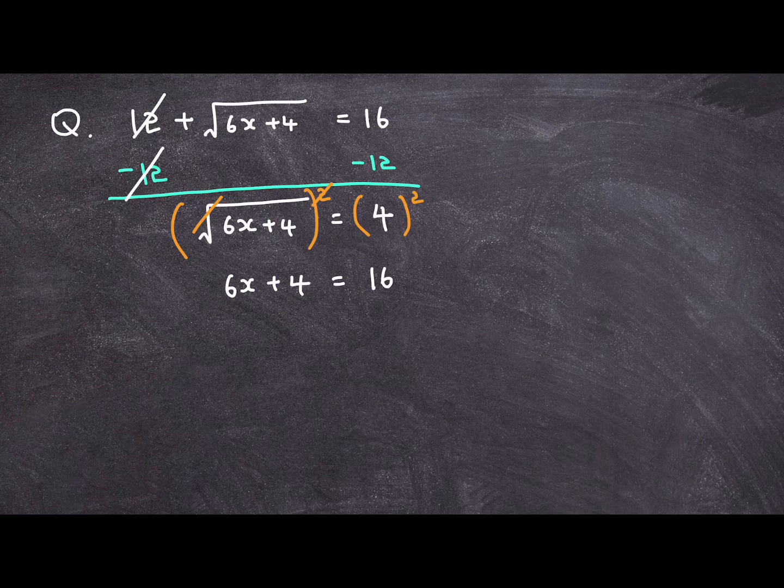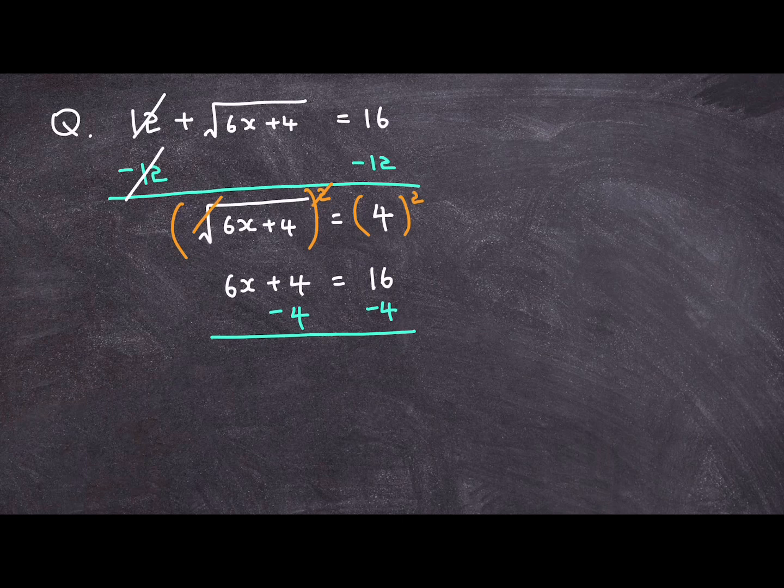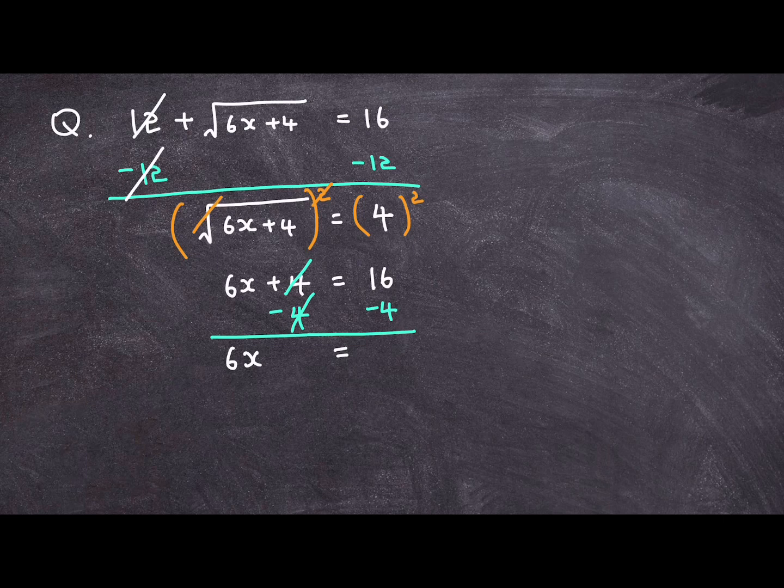What I'm gonna do is I'm going to subtract 4 from both sides to remove that integer term and I'll end up with 6x is equal to 16 minus 4 or 12.